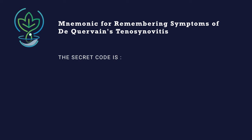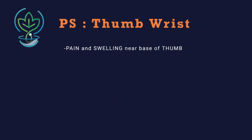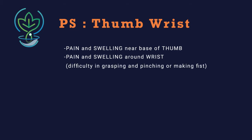The secret code is 'PS thumb wrist' — yes, you heard it right, it is very easy to remember. P stands for pain and swelling near the base of the thumb. P again stands for pain and swelling around the wrist, which causes difficulty in grasping, pinching, or making a fist.